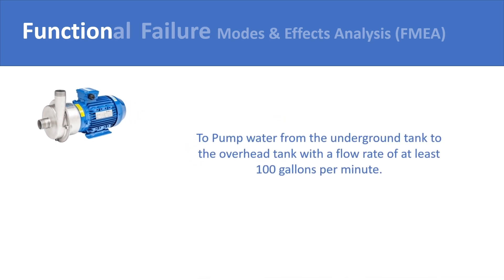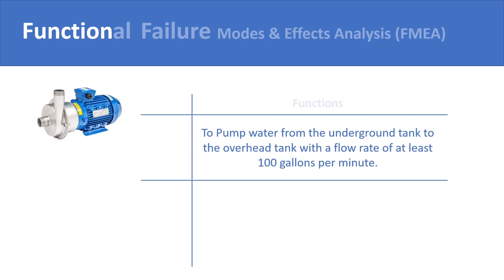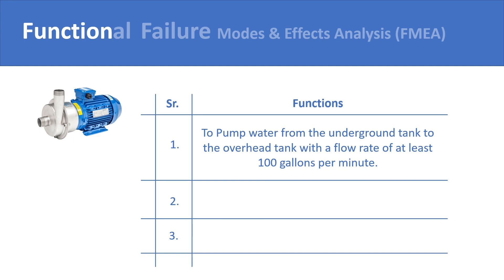The first step in the failure modes and effects analysis is to list down all the functions of a machine or piece of equipment. A simple machine like a pump may only have a single functional statement. However, for complex equipment, there can be multiple functions, resulting in multiple functional statements, each describing a different aspect of its function.